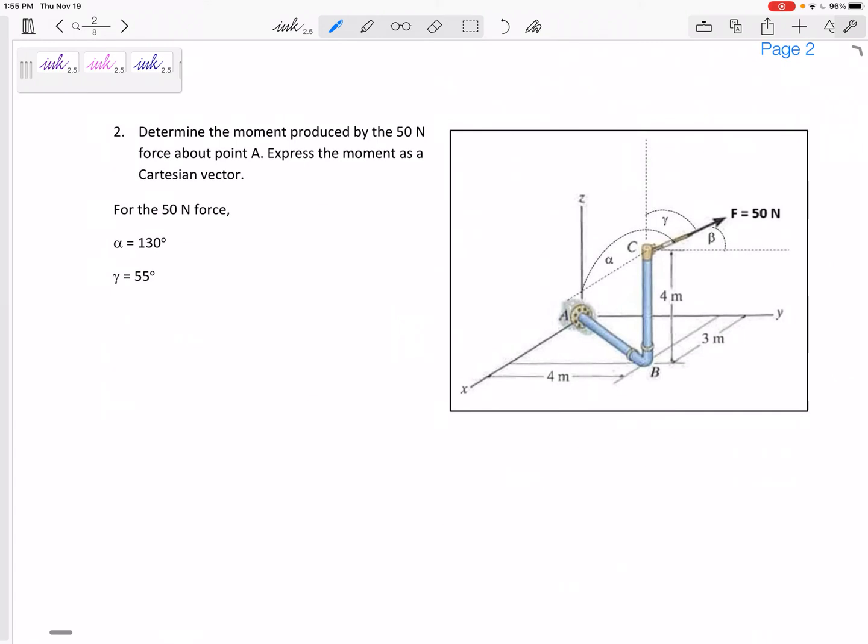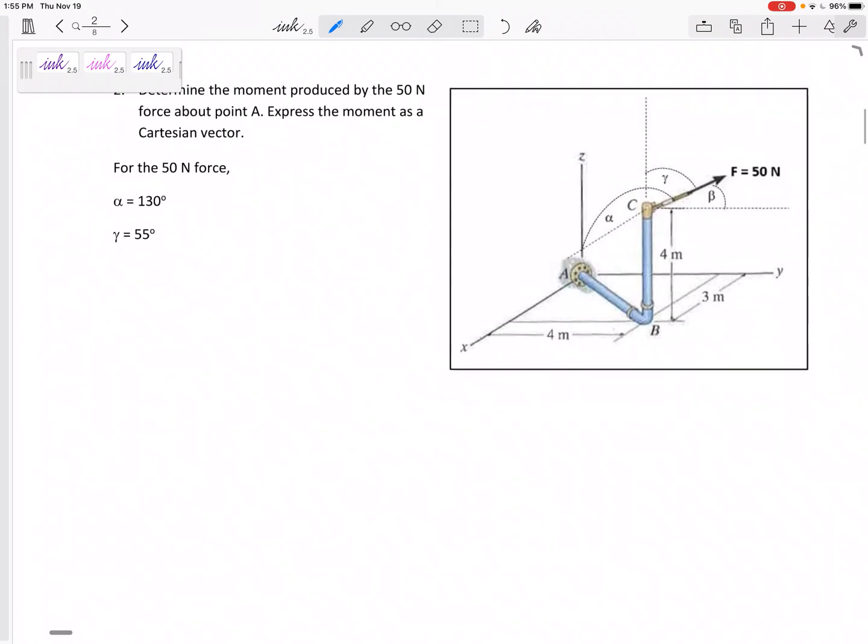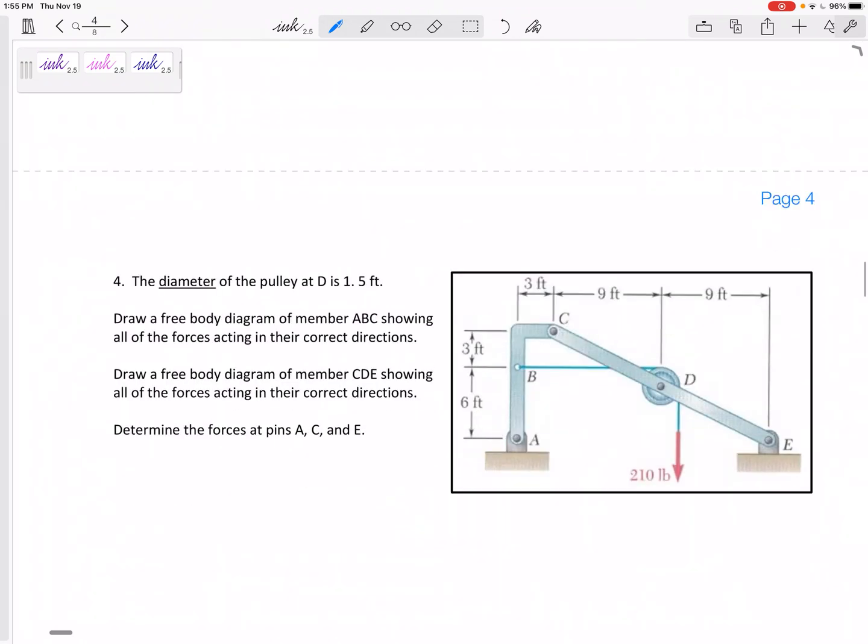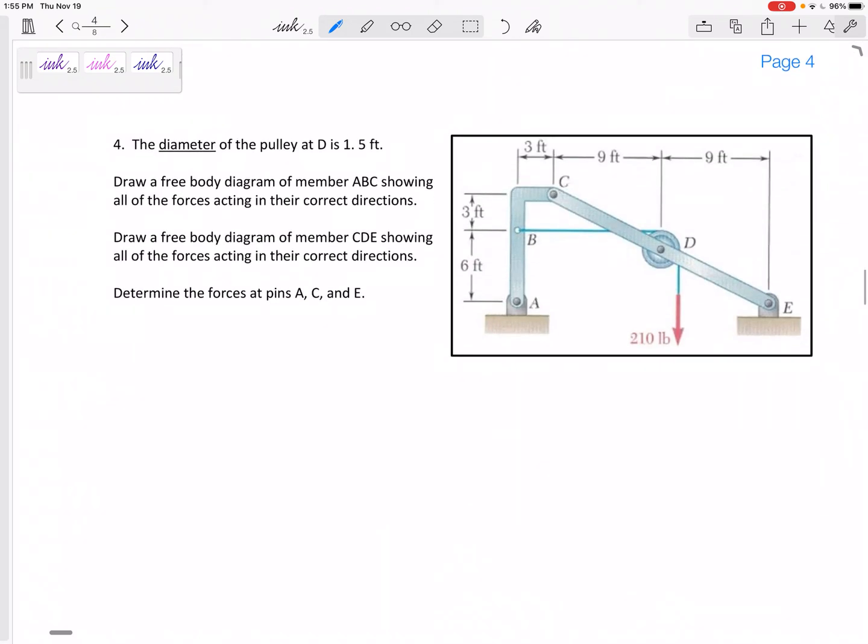Problem number three will be a truss, so it might be method of sections like this one, it might be method of joints. Problem number four will be frames and machines. There were many different types of frames and machines that we looked at—pins, rollers, rockers, slots, collars, fixed connections. Go back and look at all of those.